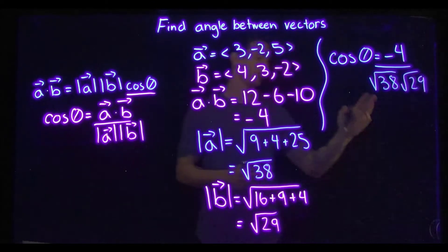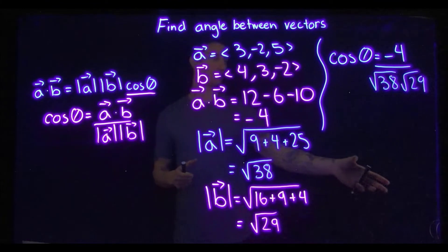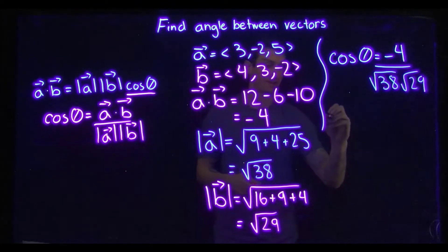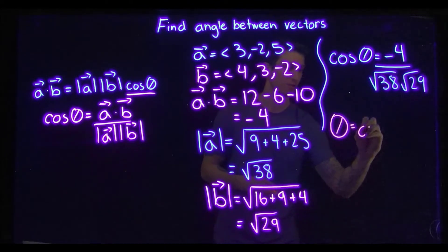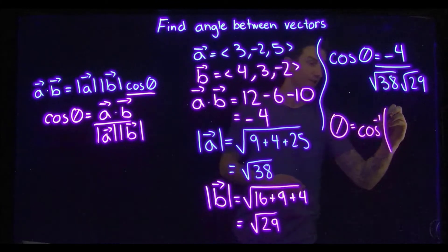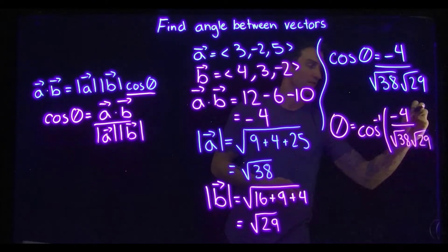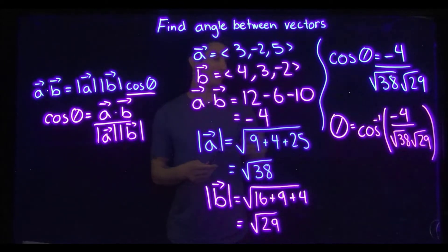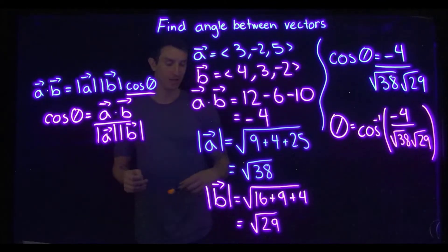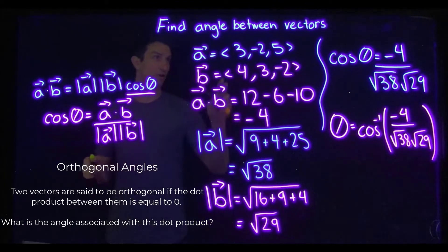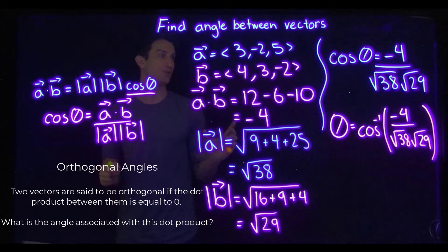There's nothing that further simplifies, so we leave it as is. To actually solve for theta, I would use a calculator: theta equals cosine inverse of (negative four over root 38 times root 29). It's useful to know that cosine inverse maps to either quadrant one or quadrant two. Other than this, that is all for finding the angle between two vectors. We're going to talk about one more thing — what it means for vectors to be orthogonal — so there'll be a short video on that.